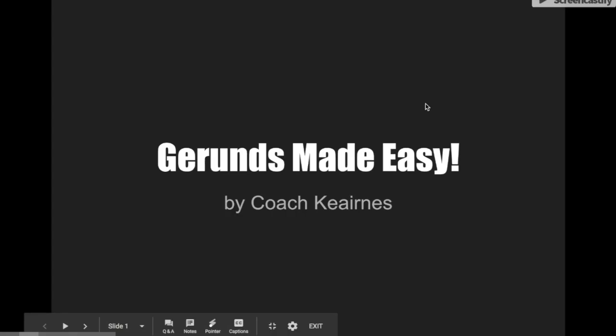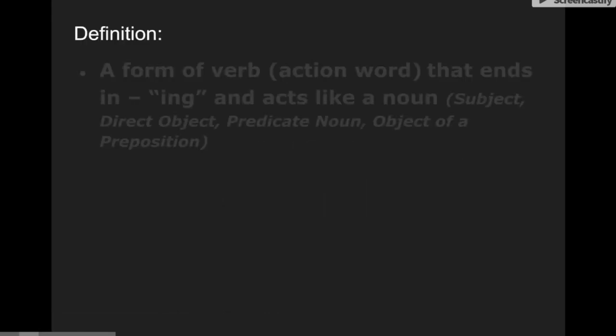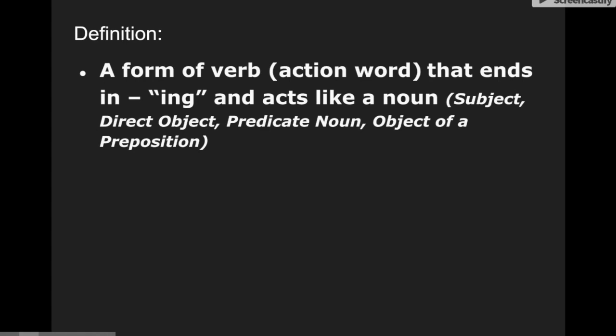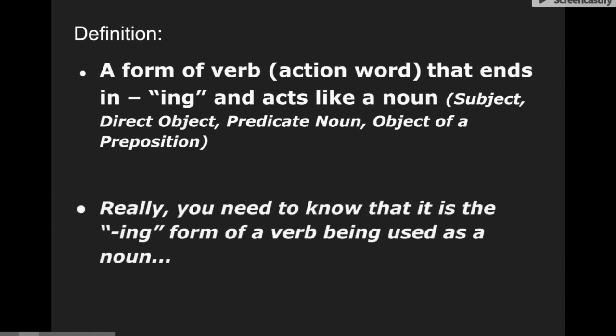Hey guys, it's Coach Kearns here. I'm going to talk to you about making gerunds a little bit easier. The definition of a gerund is that it's a form of verb, or an action word, that ends in 'ing' and acts like a noun. These can be used as subjects, direct objects, as a predicate noun, or as the object of a preposition. Really what you need to know is the simple form: it's the 'ing' form of a verb being used as a noun — you're flipping that word's part of speech.